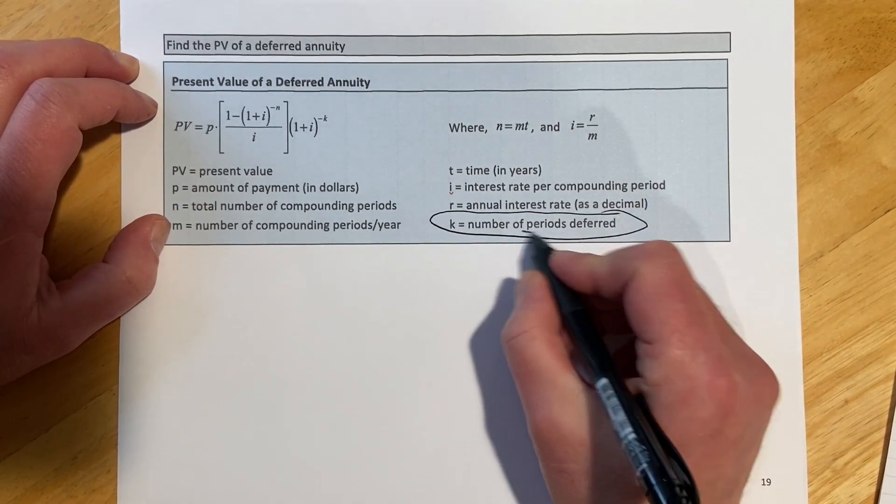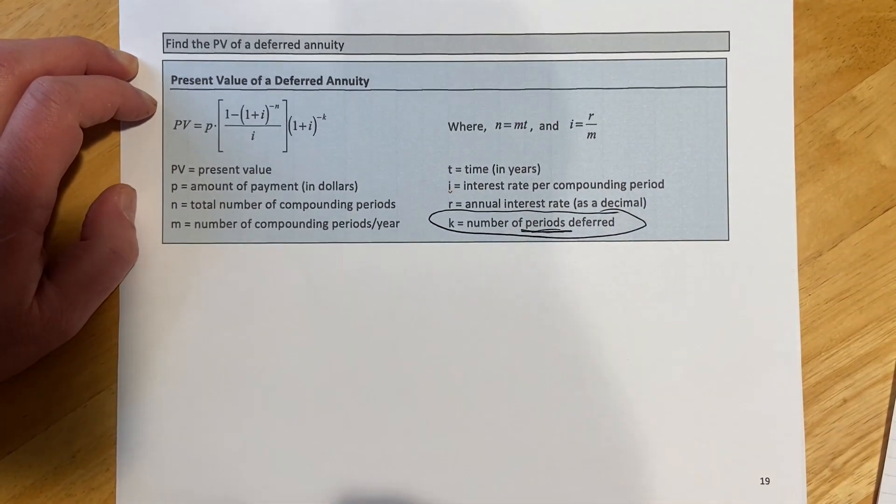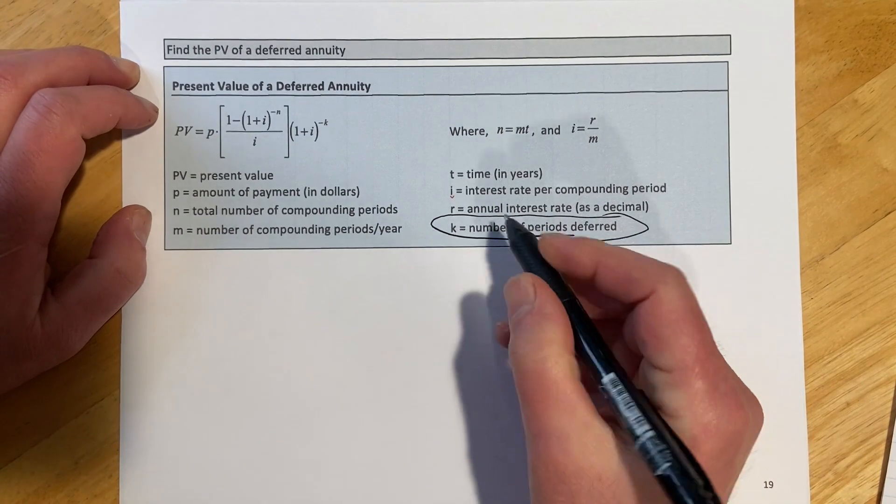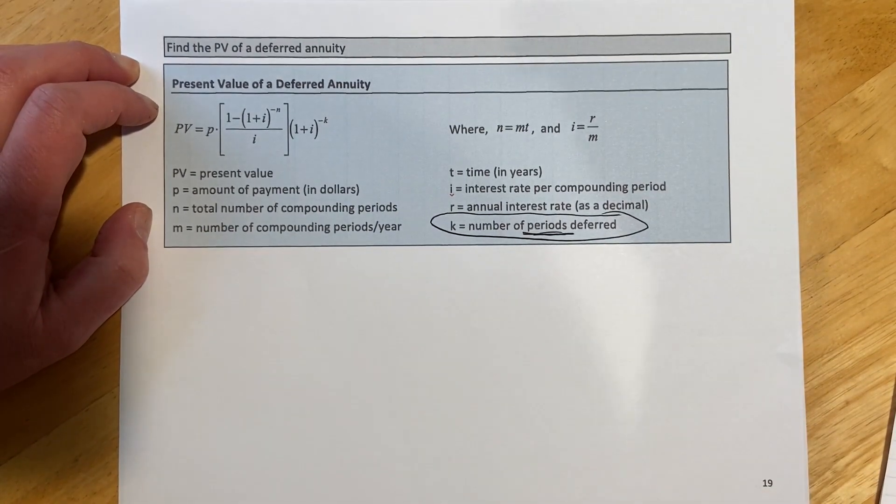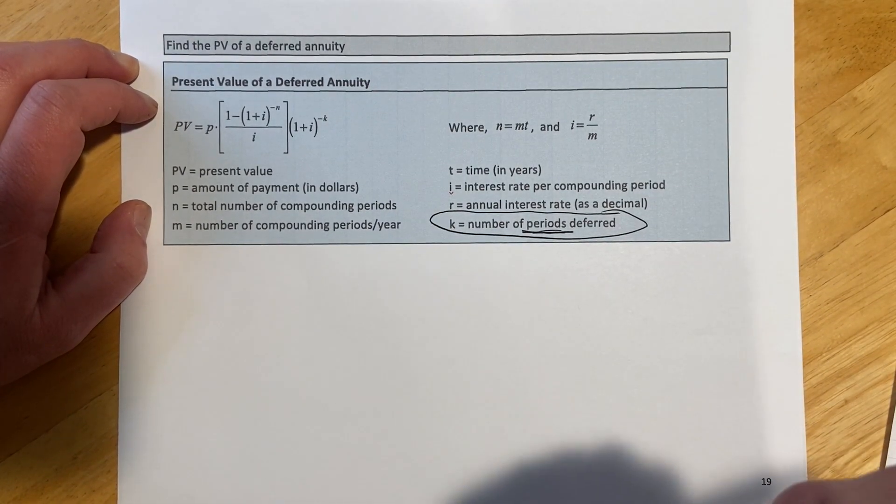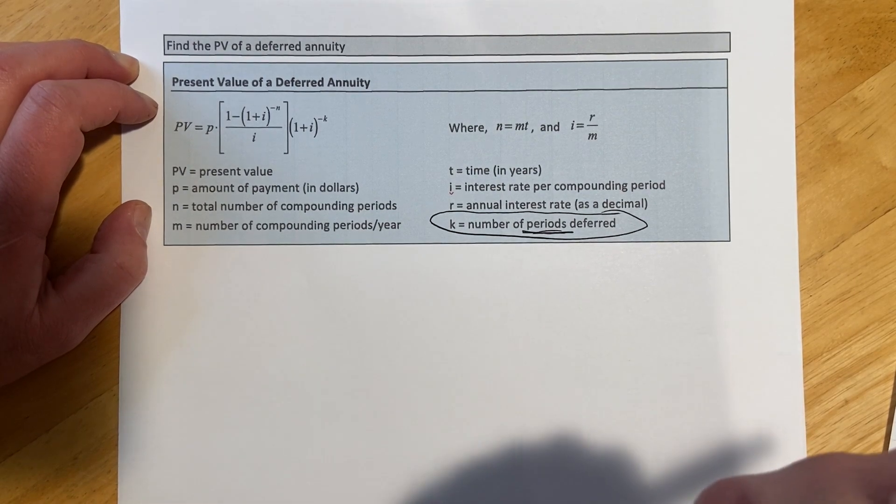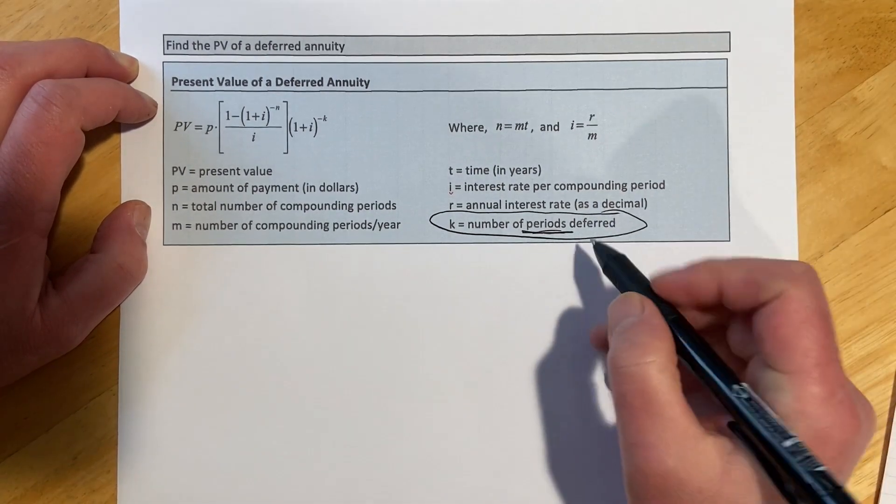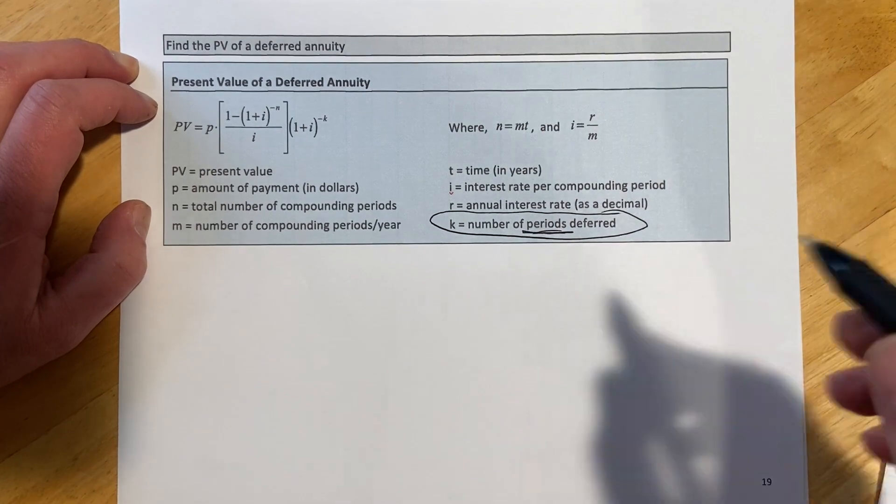So you have to be a little bit careful with the periods deferred versus what that can feel like. So if we say we're going to get quarterly payments and we deferred it for two years, we deferred eight payments, eight periods, eight payments.